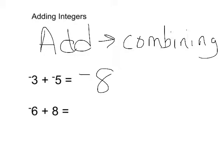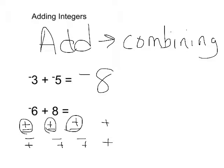But when you try to combine 6 negatives with 8 positives, then what's going to happen is you're going to have 1, 2, 3, 4, 5, 6 sets of 0 or we like to call them 0 pairs which leaves 2 positives that weren't paired up. So negative 6 plus 8 is positive 2.